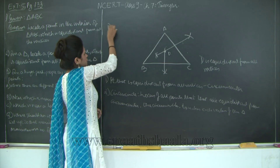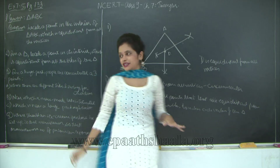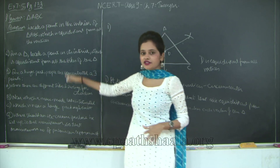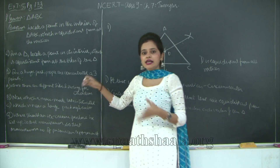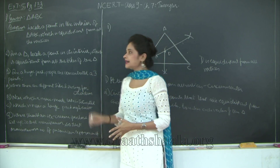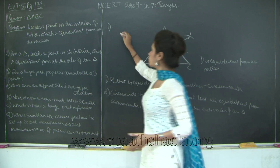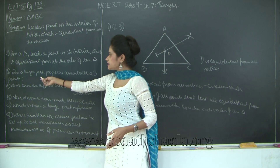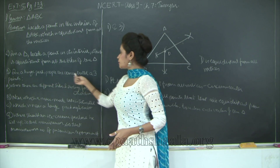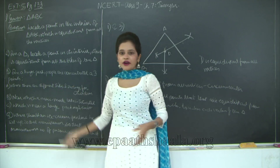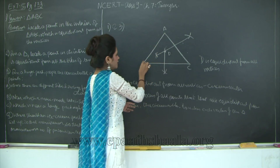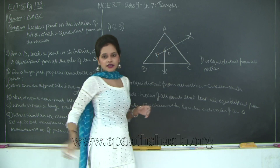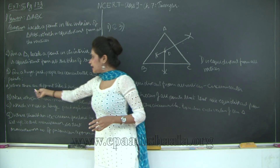This was the first question. I am going to skip the second question for now and come back to it after the third question, because the third question is exactly the same as question number 1. So I will address questions 1 and 3 together. What they are telling you is: in a huge park, people are concentrated at 3 points — A, B, and C.